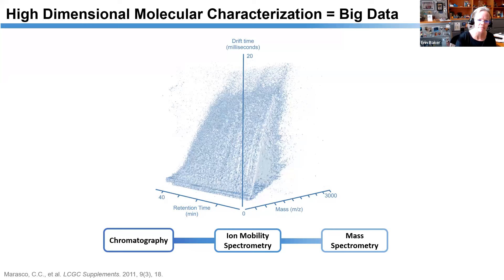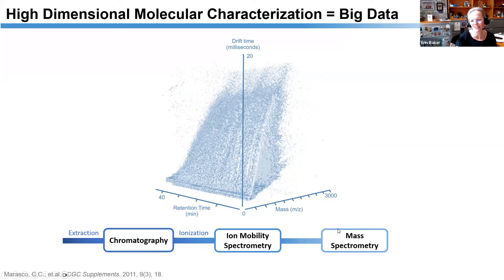Every analysis is still biased — we have to do extractions specific to the molecules we're interested in, like extracting proteins away from lipids for proteomics. We pick a chromatography column for those molecules, then pick an ionization source like electrospray. Ion mobility and MS don't bias us too much, but we do pick a specific m/z range. For each sample you could run different extractions, ionizations, and chromatographies multiplied many times to get as comprehensive a picture as possible.